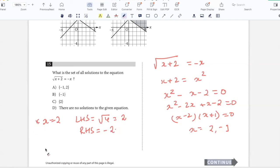Now we need to check whether these solutions would work. Let's start with X equals 2. The left-hand side would be square root of 4, which is 2, and the right-hand side would be minus 2. So X equals 2 doesn't work. What about X equals negative 1? The left-hand side would be square root of 1, which is 1, and the right-hand side would be negative of negative 1, which is also 1. So the solution is X equals negative 1 only. Option B.